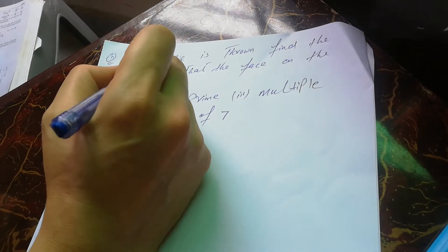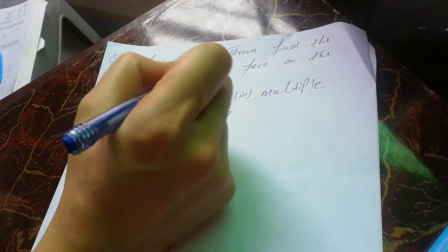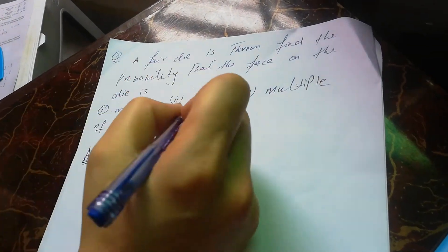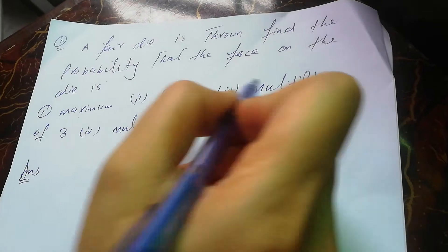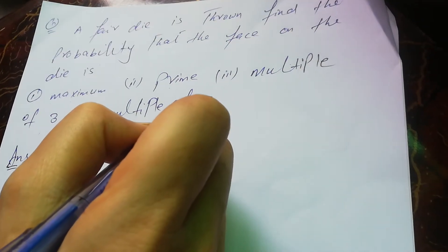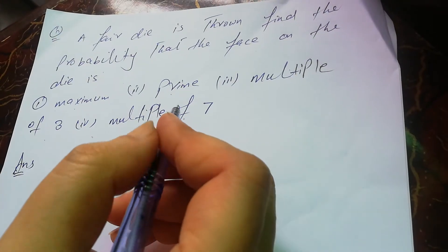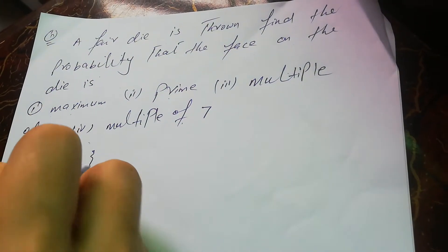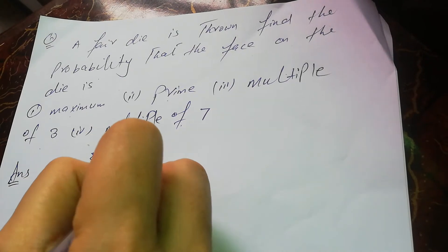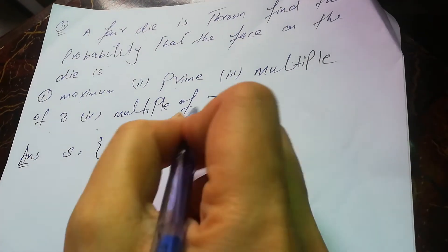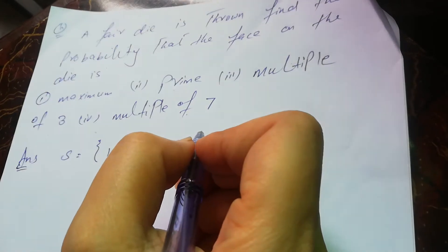This is a question of probability. A fair die is thrown. Find the probability that: first, the face on the die is maximum; second, a prime number; third, a multiple of three; and fourth, a multiple of seven. We define the sample space of the die as {1, 2, 3, 4, 5, 6}.